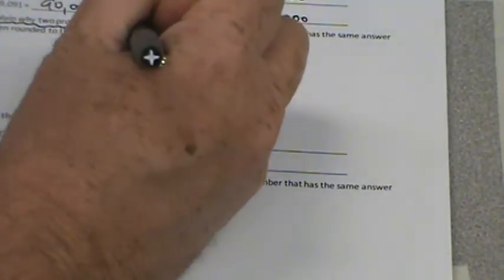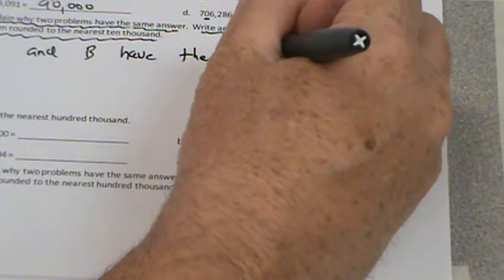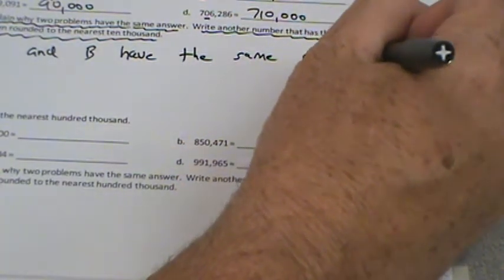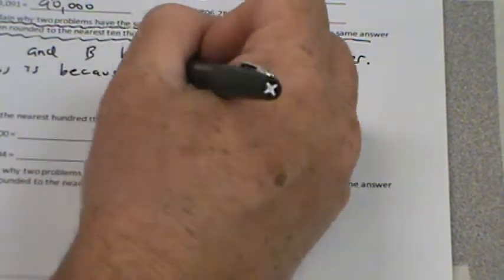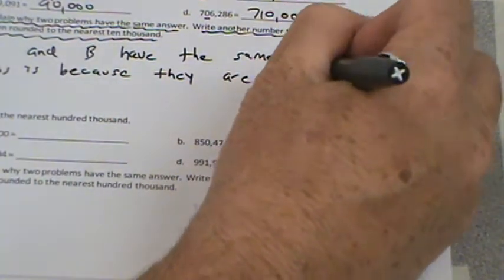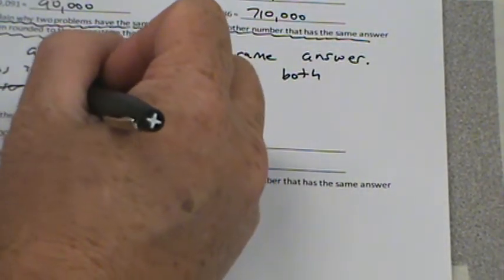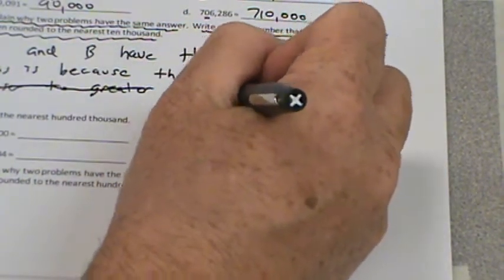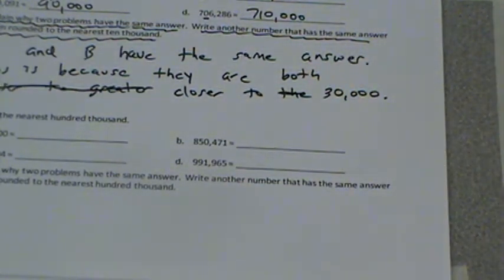Here we're going to explain why two problems have the same answer. Write another number that has the same answer when rounded to the nearest 10,000. Well, these two, we can say A and B have the same answer. This is because they are both closer to 30,000.